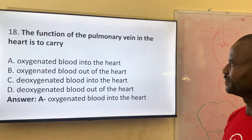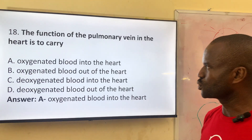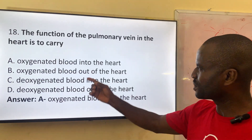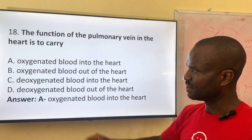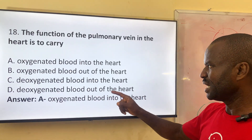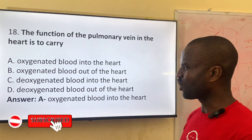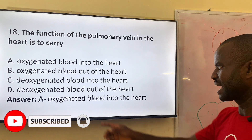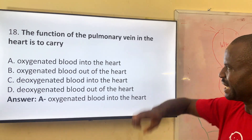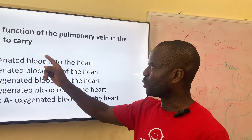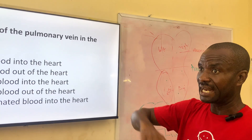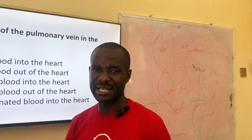Question eighteen: the function of the pulmonary vein in the heart is to do what? Option A: carry oxygenated blood into the heart. Option B: carry oxygenated blood out of the heart. Option C: carry deoxygenated blood into the heart. Option D: carry deoxygenated blood out of the heart. The correct answer is A — oxygenated blood into the heart. Pulmonary veins carry oxygenated blood; they pass through the lungs to collect oxygen and then return it to the heart, which then pumps it to all other cells of the body.